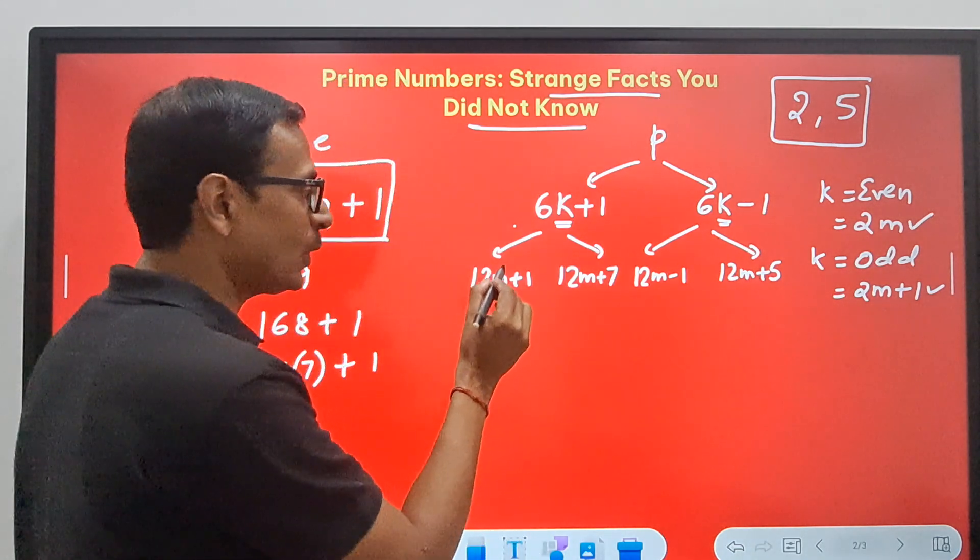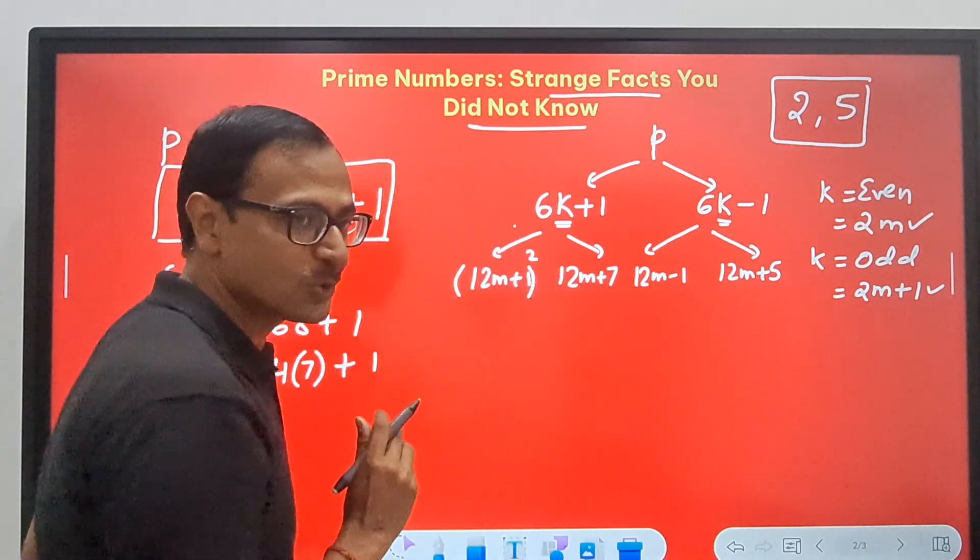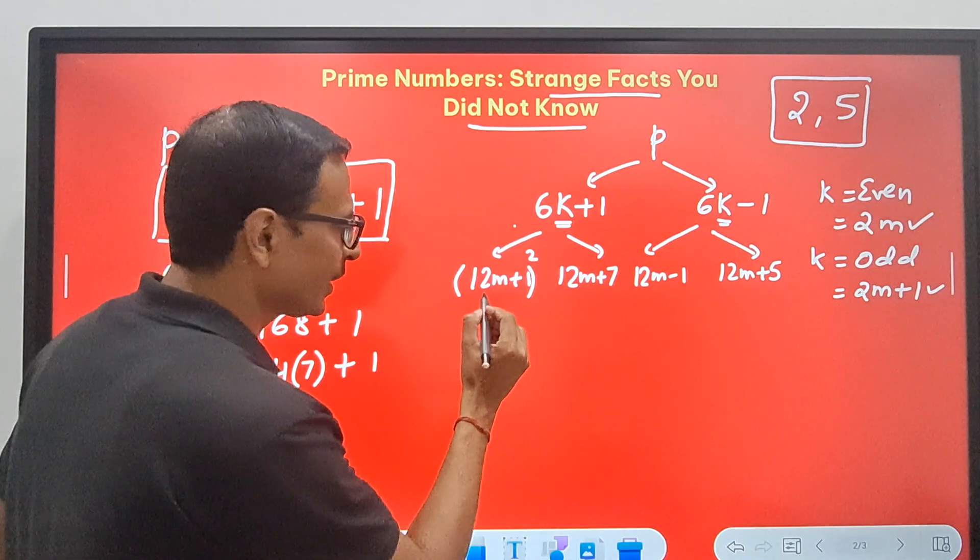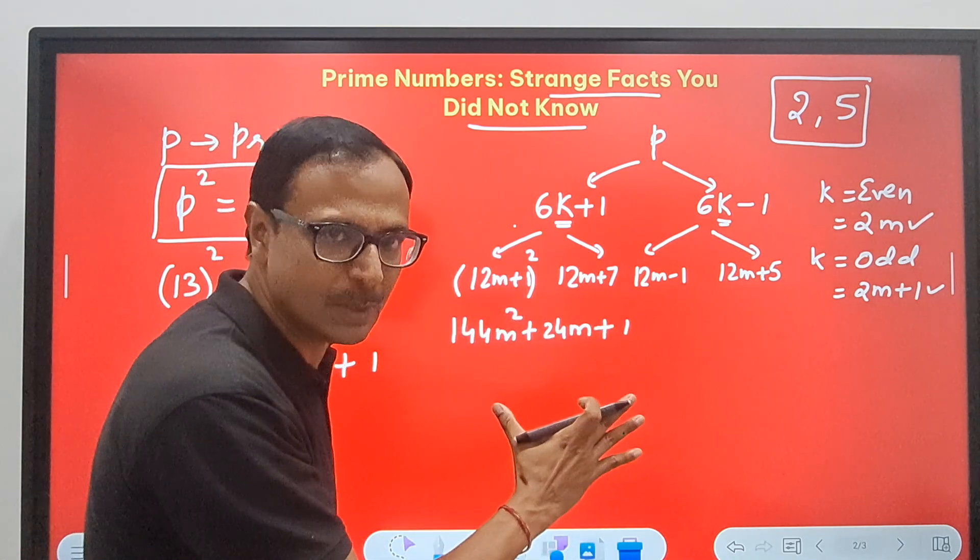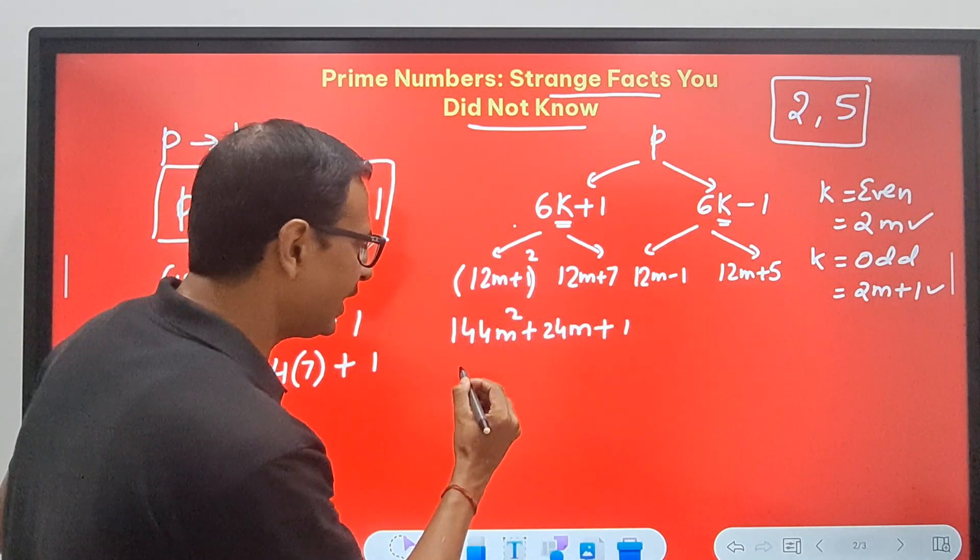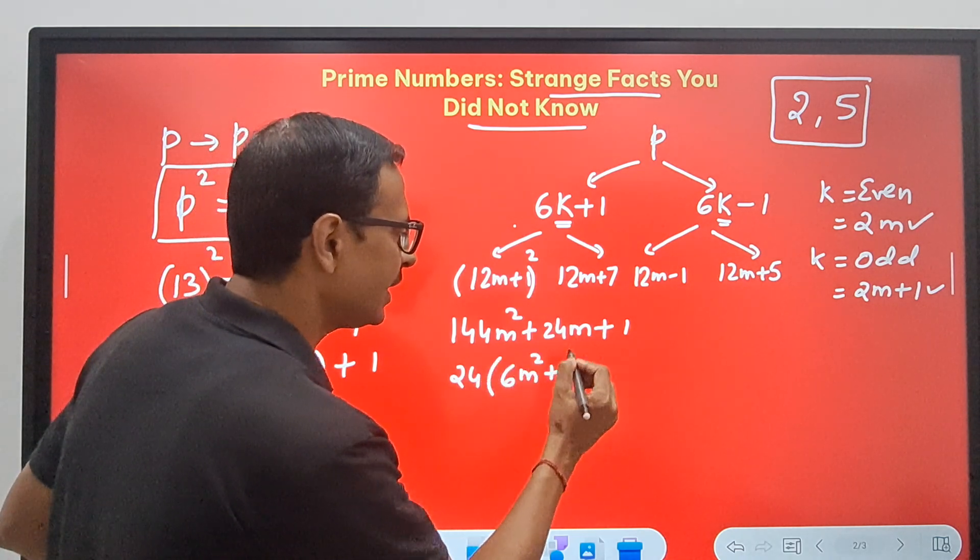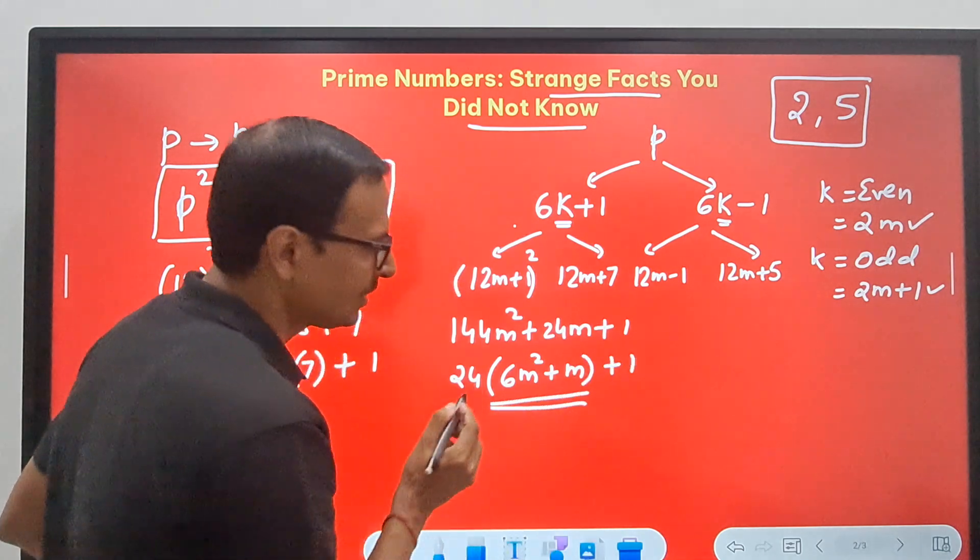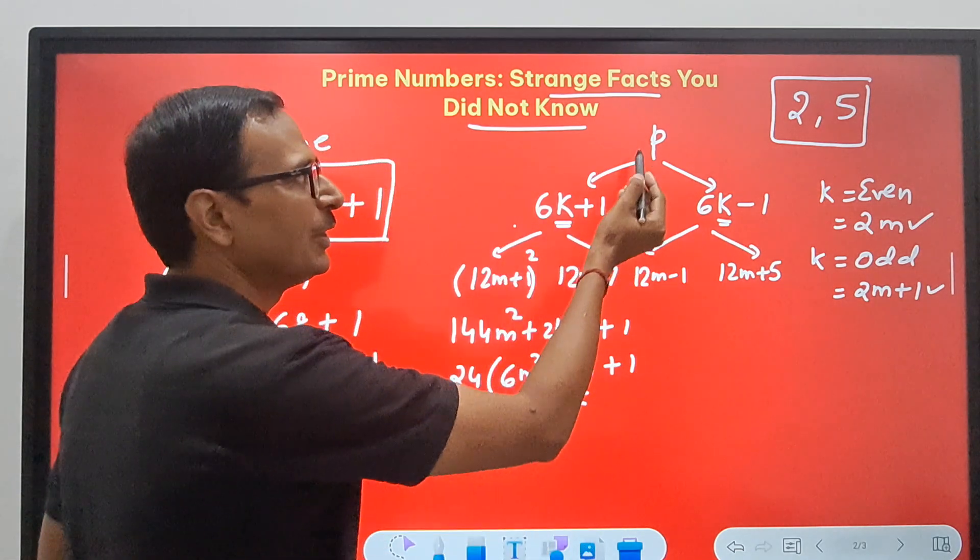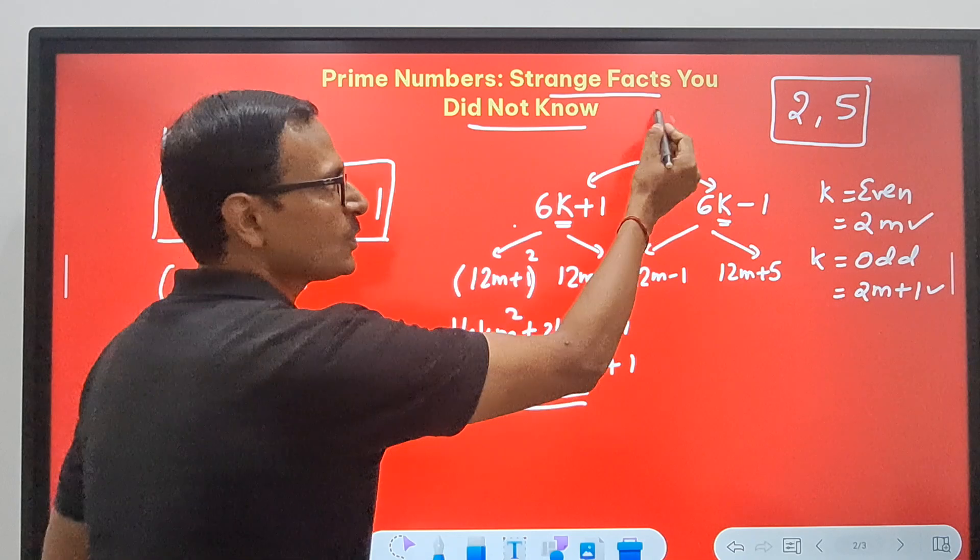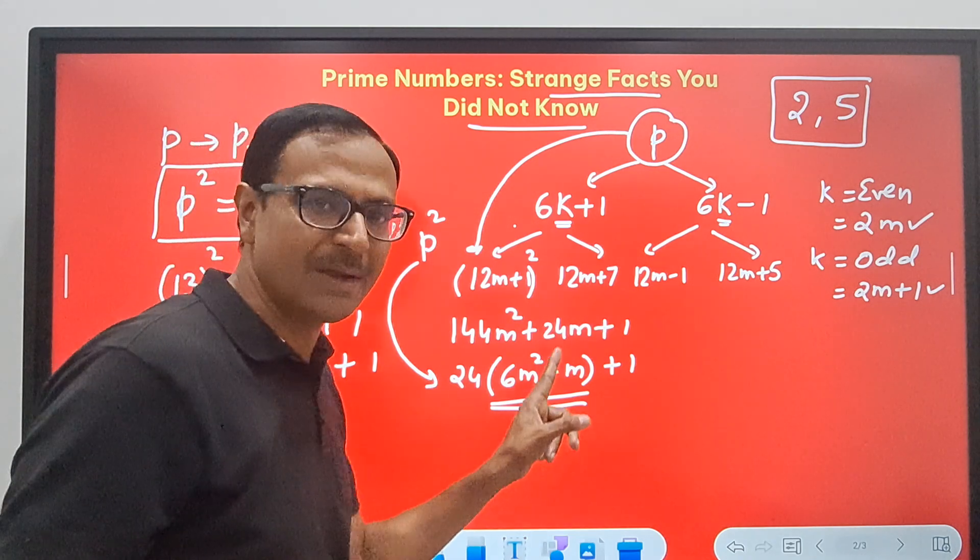Now if I square this, the square of this number, I will have a plus b whole square, so I'll have so many terms. I get 144m square plus 24m plus 1. So I use the algebraic identity a plus b whole square. Now between these two, I have 24 common, which gives me 6m square plus m, and then a plus 1. And look at this. This is a whole number, and so 24 times something plus 1. So again, the square of a prime number, this was the prime number, is expressed in this form: 24 times something plus 1.